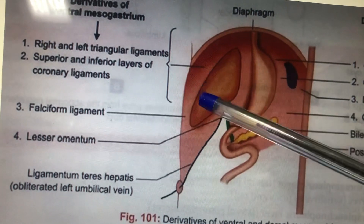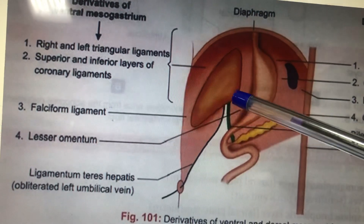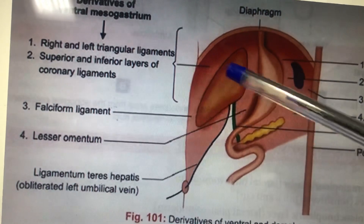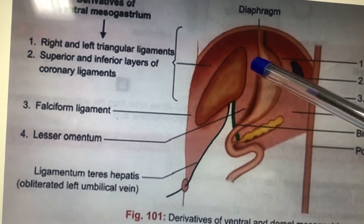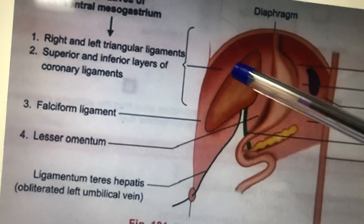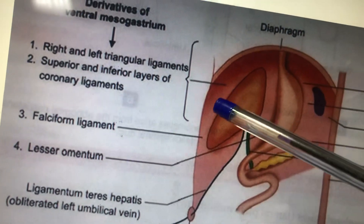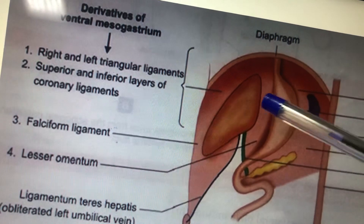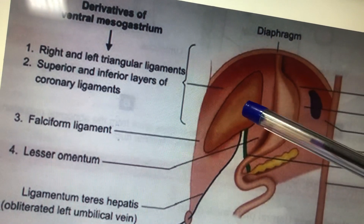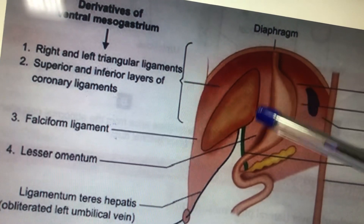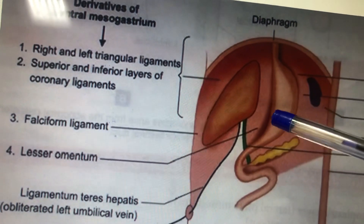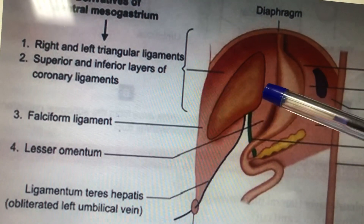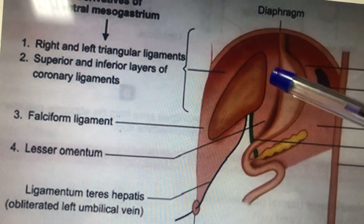Inside the ventral mesentery, the liver bud develops and forms the liver. The liver divides the ventral mesogastrium into two portions: the anterior portion between the liver and the anterior abdominal wall is the falciform ligament, and the posterior portion between the liver and the developing stomach is called the lesser omentum.